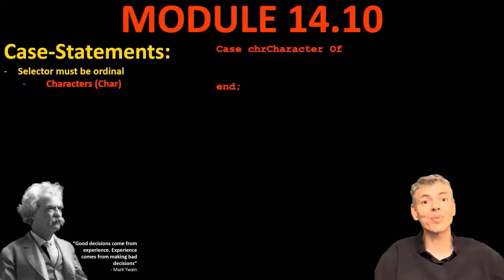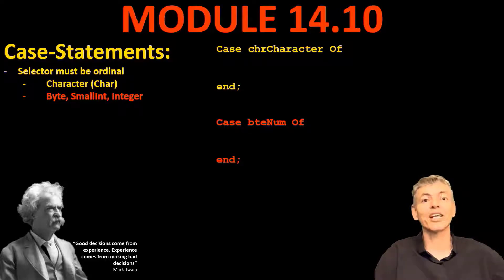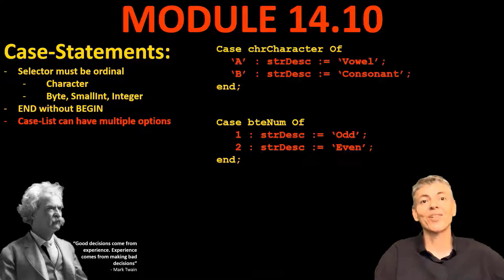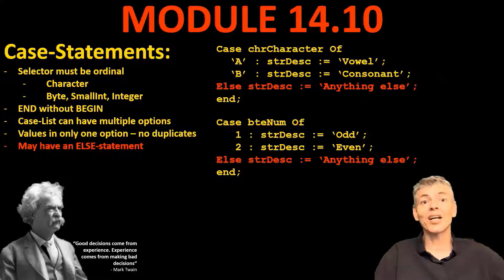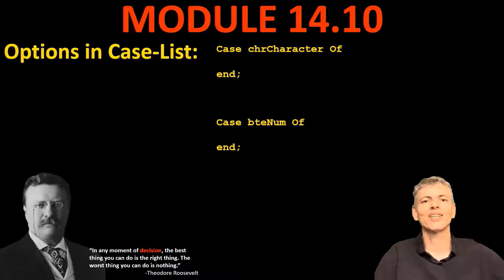Let's see how we can structure case statements and what is allowed and what not. Firstly, the selector must be an ordinal type. So it must be a char like chrCharacter here, or it can be an integer type like integers, smallints, or bytes like btenum here. Secondly, a case statement has an end at the bottom without the corresponding begin. Thirdly, more than one check can be done by a case statement. We call this a case list. Also the values in each individual option in the case list must be unique. So the same value cannot appear in more than one option, because only the first option that evaluates to true will execute. The case statement may have an else option for any values that are not covered in the preceding options in the case list.